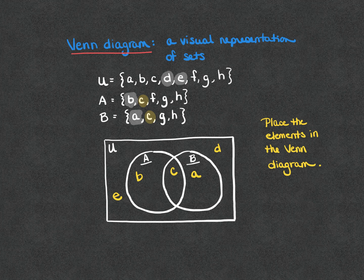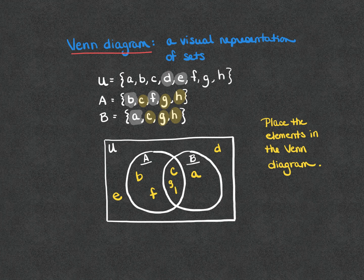Looking at element F, F is in A and A only, so we'll put F in subset A only. Then we look at elements G and H — both G and H are in set A and set B, meaning they are in the intersection of A and B, so G and H belong there in the intersection.